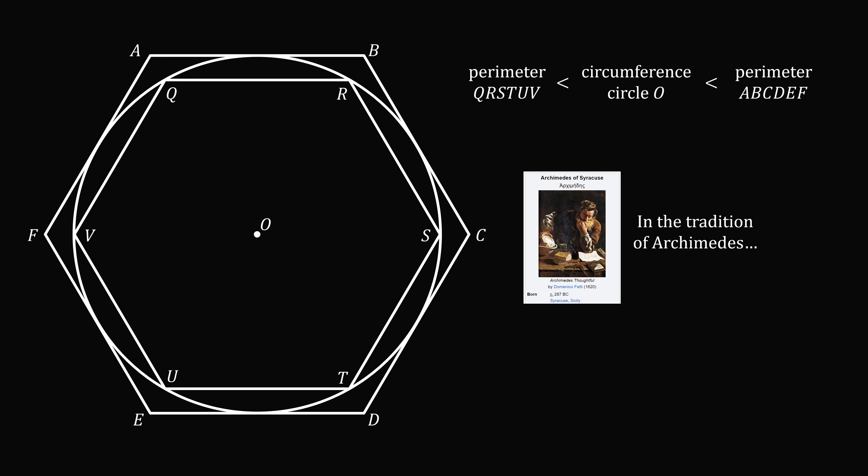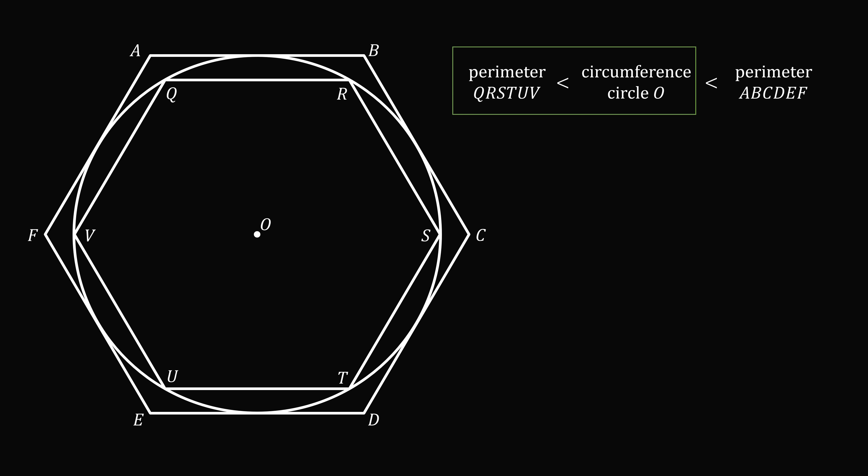Let's try to think about it. So first we have the perimeter of the inscribed hexagon is less than the circumference of the circle. This is not too hard to justify. Let's take a look at one side of the inscribed hexagon, which is QR. So this is a straight line segment between the two points Q and R. The circular arc which it subtends will be an arc QR. This will be a curved line segment. So it is intuitive that the length of the straight line segment QR is less than the length of the arc QR. This is true for each of the six sides, and so we can justify that the perimeter of the inscribed hexagon is less than the circumference of the circle. So far so good.